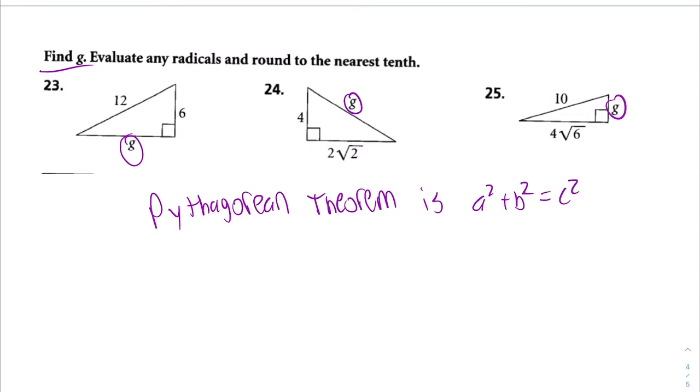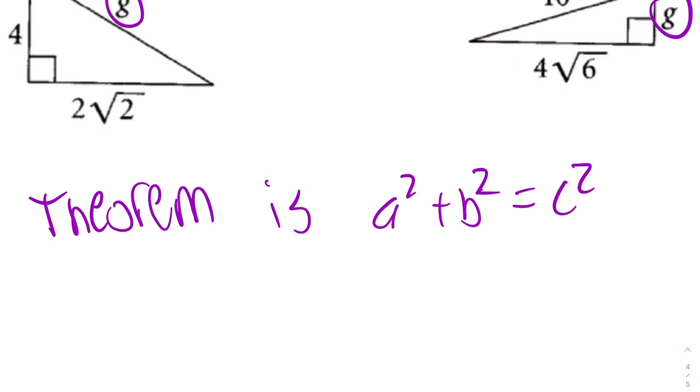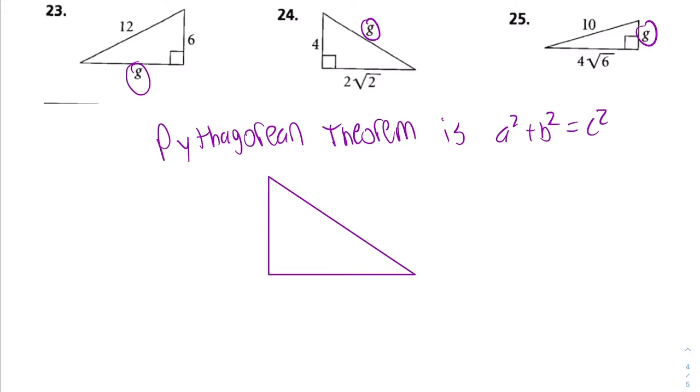So if you take something and we're going to label it the letter A and you square it, you add a different thing and you square it, you should get a third thing, N squared. Anytime we have a right triangle, a shape with a right angle, we can label that shape a specific way.